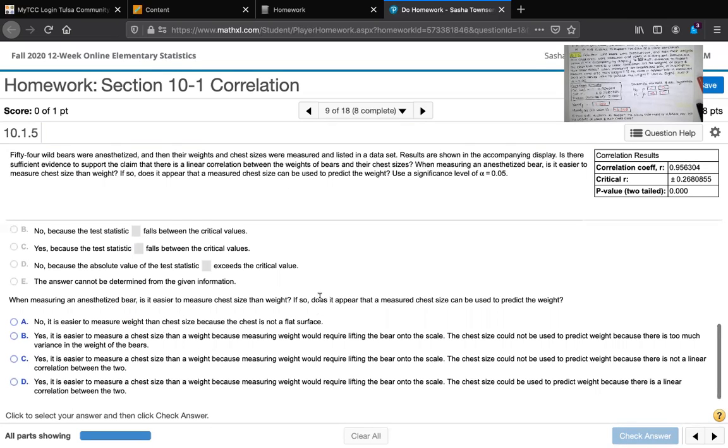And it says, if so, does it appear that a measured chest size can be used to predict the weight? And it appears that it can be because chest size and the weight are correlated with each other. So it's either a BC or D.